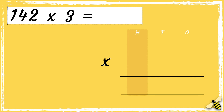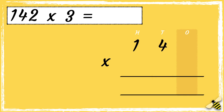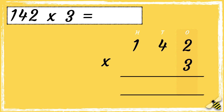The number 142 has 1 hundred, 4 tens, and 2 ones. The number 3 has three ones. So now that we're set up we're ready to multiply. Pause the video to give you time to work out the answer. Press play when you're done.